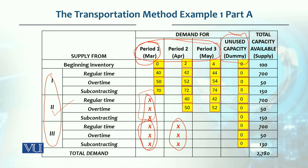यह cost हमने हर cell के अंदर डालनी है except जो cross लगे हुए cells हैं। यह हमारे first step के अंदर करना है। Right most column capacity बता रहा है: beginning inventory 100 units, regular production 700 units, overtime 50 units, subcontracting 150 units — इनका total sum करें तो 27,080 units की capacity available है।